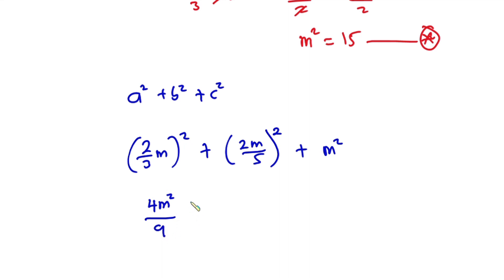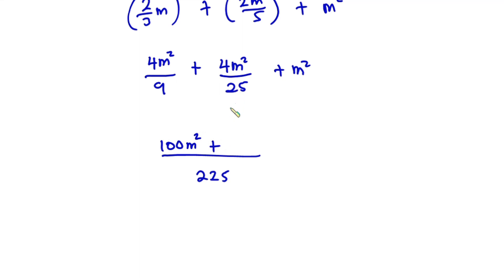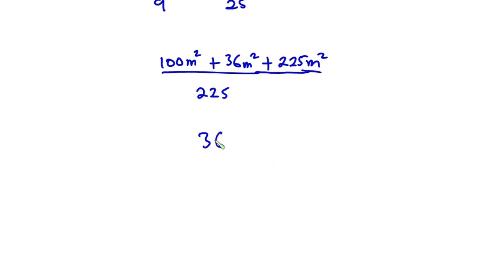Expanding, we have 4m²/9 plus 4m²/25 plus m². Finding the LCM of 9, 25, and 1, we get 225. This gives us 100m² plus 36m² plus 225m², all over 225. Summing the numerator gives 361m² divided by 225.